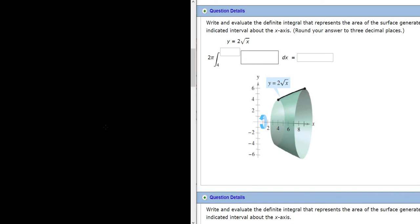In this problem, we have to find the area of the surface of revolution that we get when we take this graph and rotate it about the x-axis.